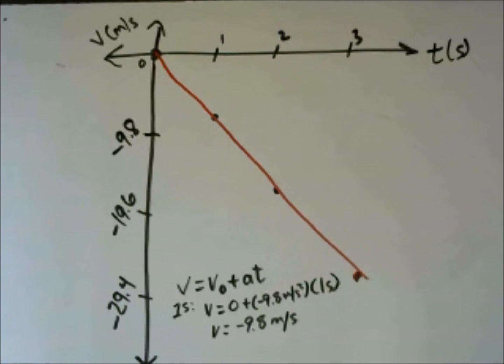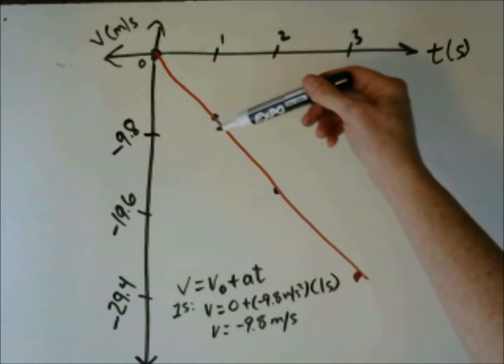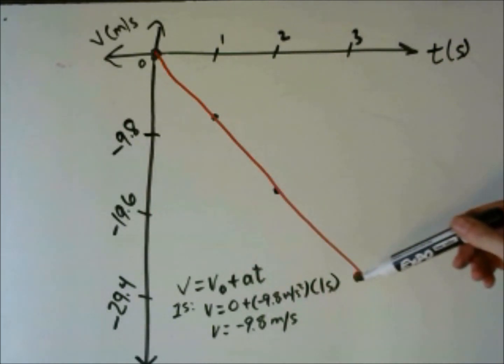The velocity time graph for an object in free fall, all of the velocity is going to be in the negative direction, and it's going to have a constant slope of negative 9.8 meters per second squared.